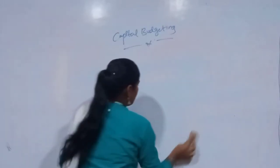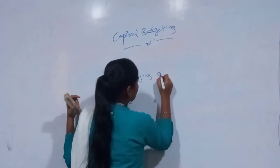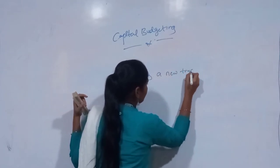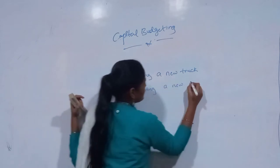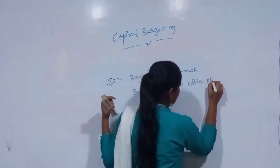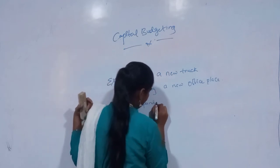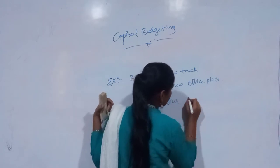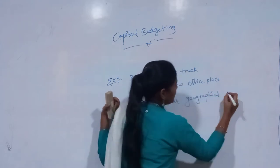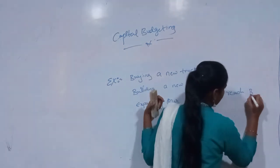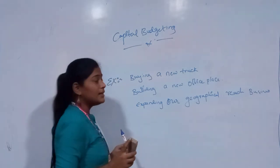So to summarize, examples of capital budgeting decisions may be buying a new truck, or building a new office, or expanding the geographical reach of the business. These are some of the main examples of capital budgeting decisions, which have to be taken very carefully.